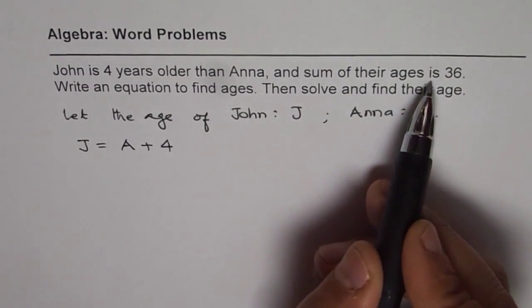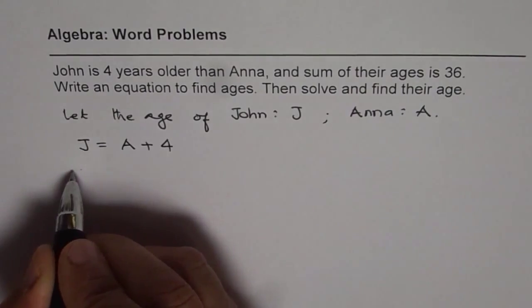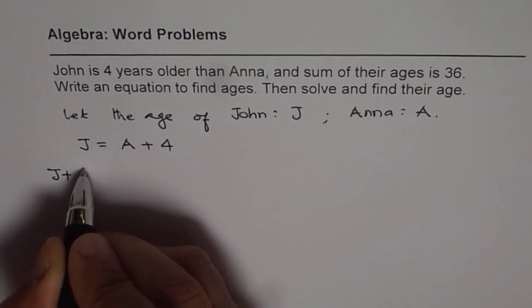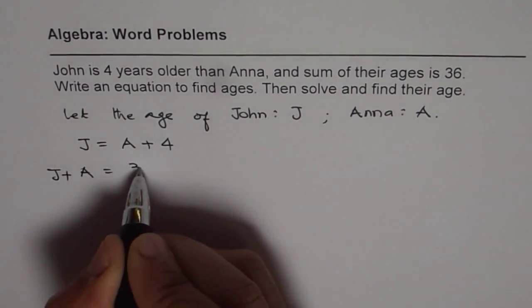And the sum of their ages is 36. That means when you add the age of John and Anna, you should get 36.